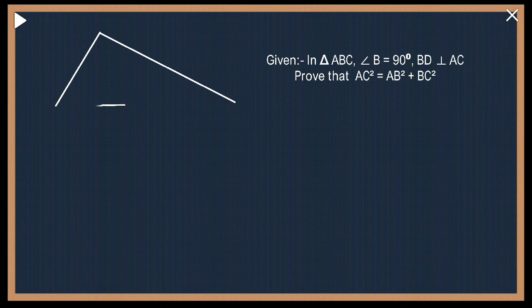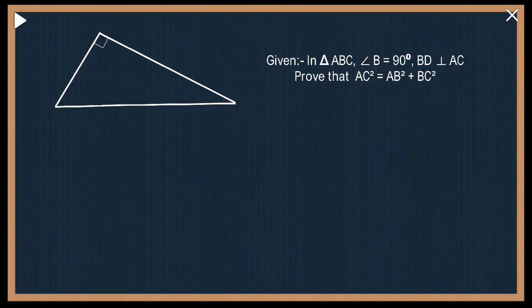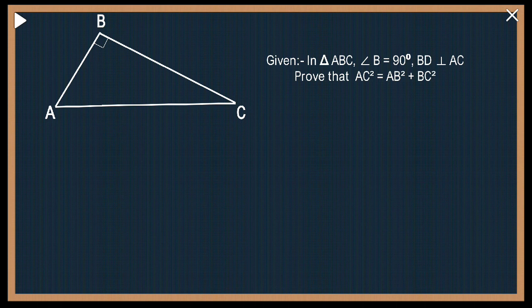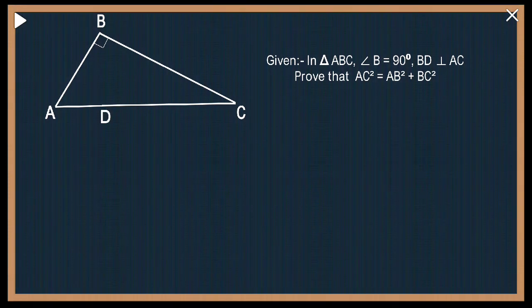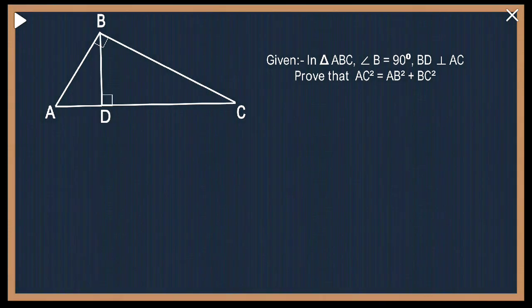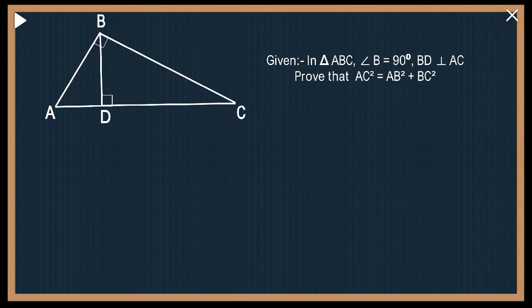So my triangle over here is ABC. B is 90, so I have marked it over there. There is a line BD which is perpendicular to AC. So from D there is a line which is perpendicular. Now we are asked to prove that AC² equals AB² plus BC².